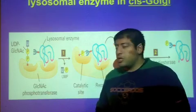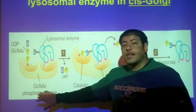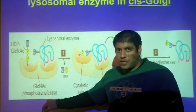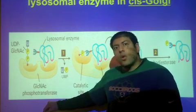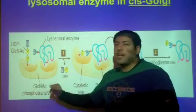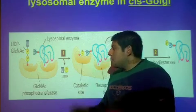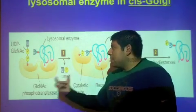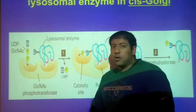In the cis-Golgi, there is an enzyme called the GLUC-NAC phosphotransferase. On your test, if you want, you can abbreviate it G-L-C-N-A-C, GLUC-NAC. But this GLUC-NAC phosphotransferase is an enzyme that lives in the cis-Golgi.